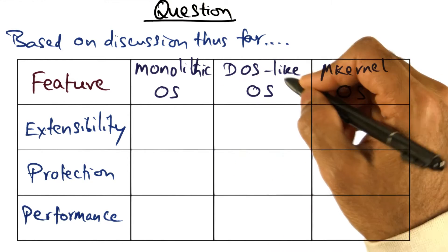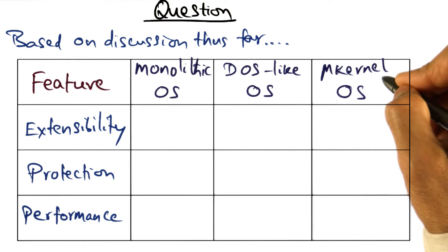One is the monolithic operating system, the DOS like structure, and the microkernel based operating system.